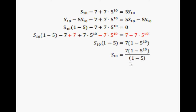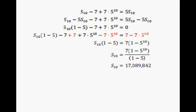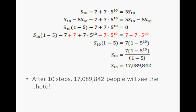You might be saying this is going to give us a negative number — but the numerator is also negative, and a negative divided by a negative will be positive. To verify this answer you'll need your calculator to figure out 5 to the tenth power, subtract that from 1, multiply by 7, and divide by negative 4. The answer is 17,089,842. So after 10 steps, over 17 million people will see your photo.